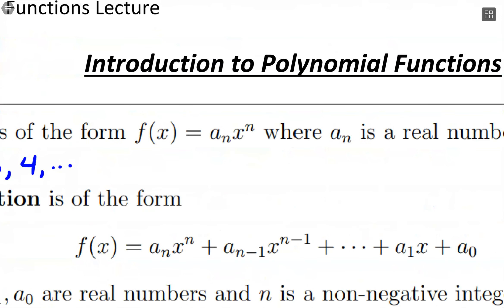For example, a power function could be 4x to the fifth power. That a-sub-n piece would be the numerical coefficient of 4, and then we have our variable x with a non-negative integer exponent. To make this a polynomial, we start adding on other pieces. The key is we have this largest exponent — that's our degree of the polynomial — and then exponents that decrease from there.